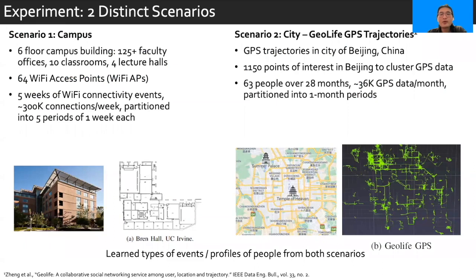Moving to experiments, we evaluated SmartSpec using two real-world scenarios. In the campus setting, we used Wi-Fi connectivity events captured at UCI, which had 64 Wi-Fi access points. We used five weeks of data partitioned into one-week periods in our evaluation. For the city scenario, we used GPS trajectory data collected by Microsoft Research Asia from a project called Geolife. To convert GPS data to spaces, we identified 150 points of interest in Beijing and clustered the GPS data to the nearest one. In both datasets, we learned types of events and profiles of people in each scenario.